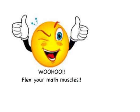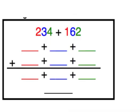Woohoo! Flex your math muscles because you are so awesome at writing numbers in expanded form. Okay, let's move on and try to add three-digit numbers using that place value strategy and remembering how to write our numbers in expanded form. So first let's look at the addition problem 234 plus 162.